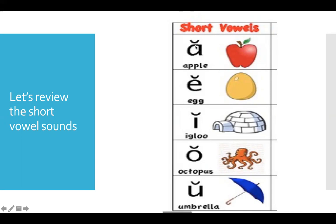So the A says 'ah,' the E says 'eh,' the I says 'I,' the O says 'ah,' and the U says 'ah.' Esos son los sonidos de las vocales en inglés — the short vowel sounds, sonido corto.